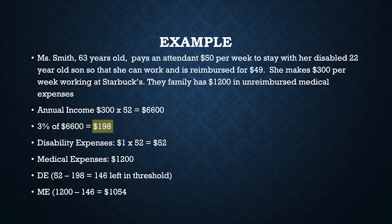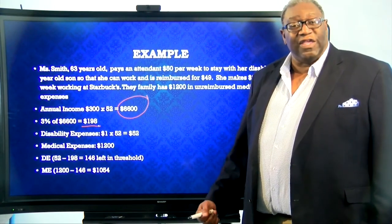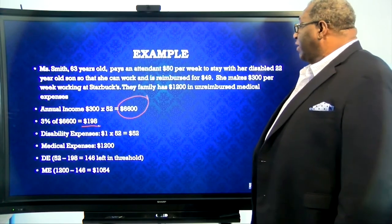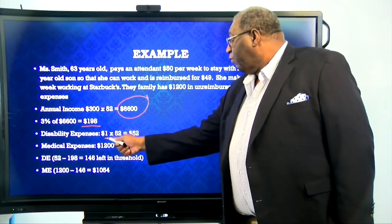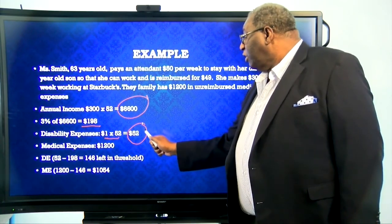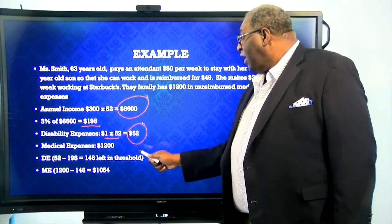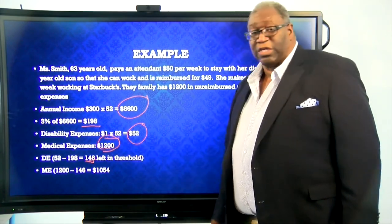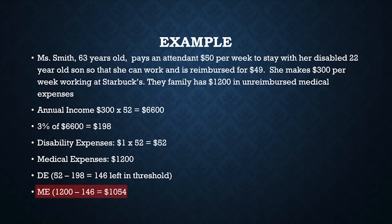So we have to spend this $198 threshold first on disability, and if there's anything left, it goes into medical. Her disability expense — she only pays a dollar every week, so that's $52. We subtract $52 from the $198, and we have $146 left. We have to apply that $146 to the $1,200 medical before we can use it. So $1,200 minus $146 gives us $1,054. In this family's case, we're not going to give them anything for disability expense — it was all eaten up in the 3% threshold — and they're going to get $1,054 for medical.